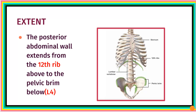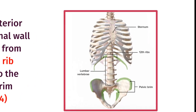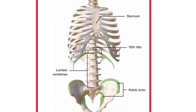The next thing we'll look at is the extent of the posterior abdominal region. This region extends from the 12th rib above to the pelvic brim below. At the pelvic brim, we're looking at the region of the fourth lumbar vertebra.